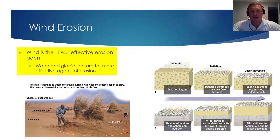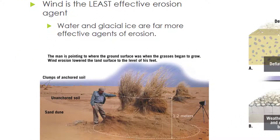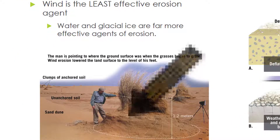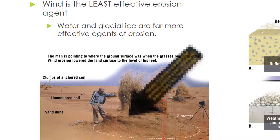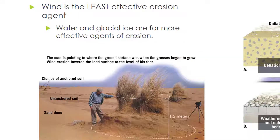As mentioned at the end of the previous vodcast, flowing water and glaciers are far more effective erosional agents. If you look at the picture of this man pointing to where the ground surface was when the grasses began to grow, we see that wind erosion does play a role in desert regions. Over time, wind erosion lowered this land surface about 3 to 4 feet, and that's a pretty significant drop for a surface.